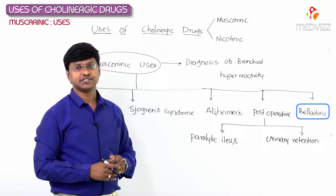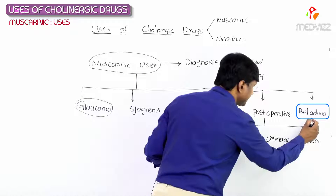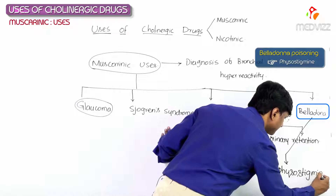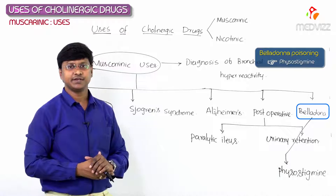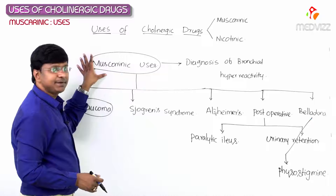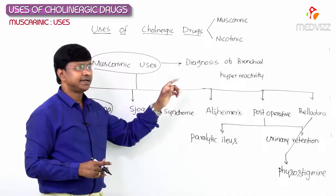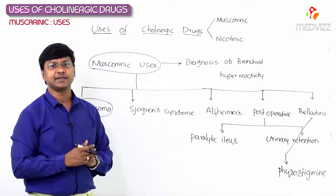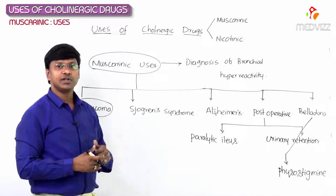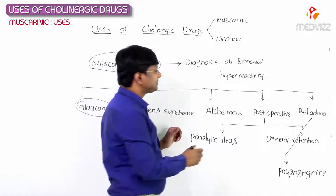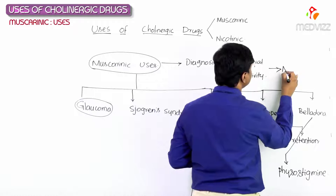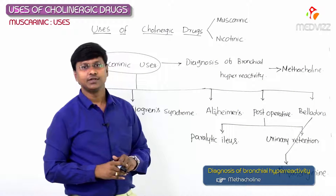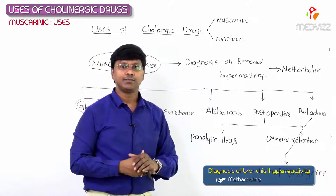In the case of belladonna poisoning, the drug used is physostigmine — remember this important point. The other muscarinic use is for the diagnosis of bronchial hyperreactivity, mainly in atopic asthma to check whether bronchial hyperreactivity is present. The drug used for this diagnosis is methacholine.